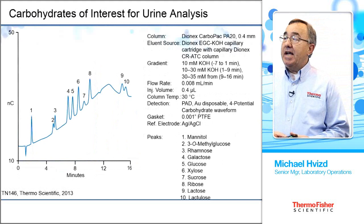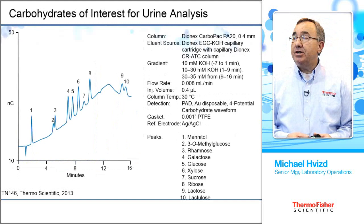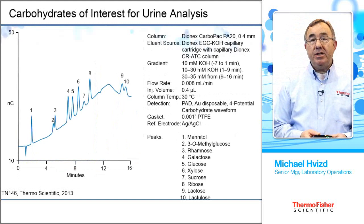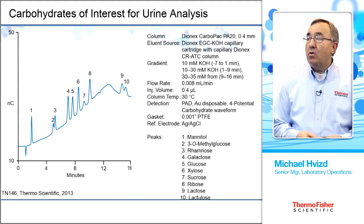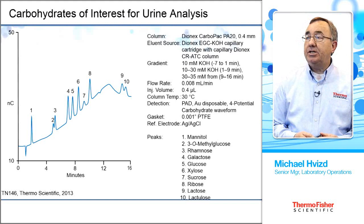Here's an example of a biological application — looking for carbohydrates in urine. This separation is done with a hydroxide gradient using the eluent generator module, running at about 8 microliters per minute in capillary format. The separation shows a change in the baseline due to the change in hydroxide concentration, going from 10 millimolar up to 35 millimolar KOH. Even with that baseline shift, we're still able to resolve all peaks of interest and get good detection from all of them.